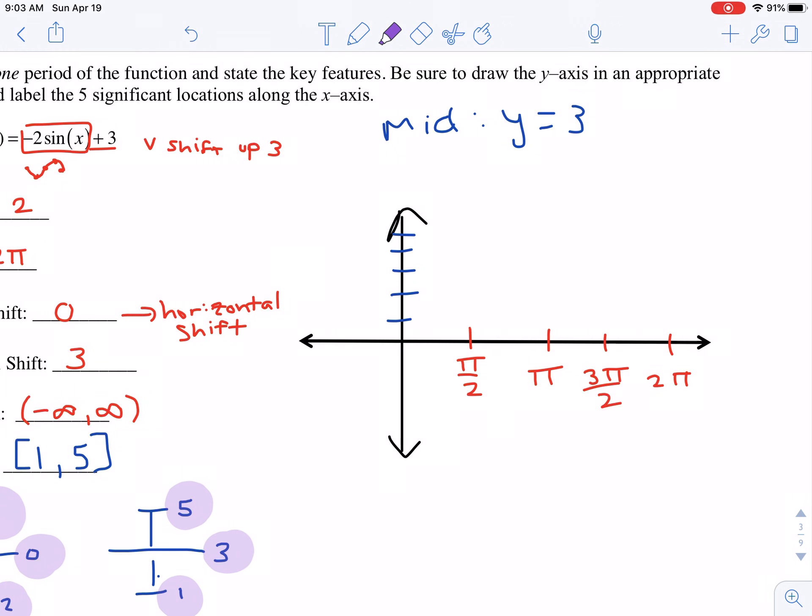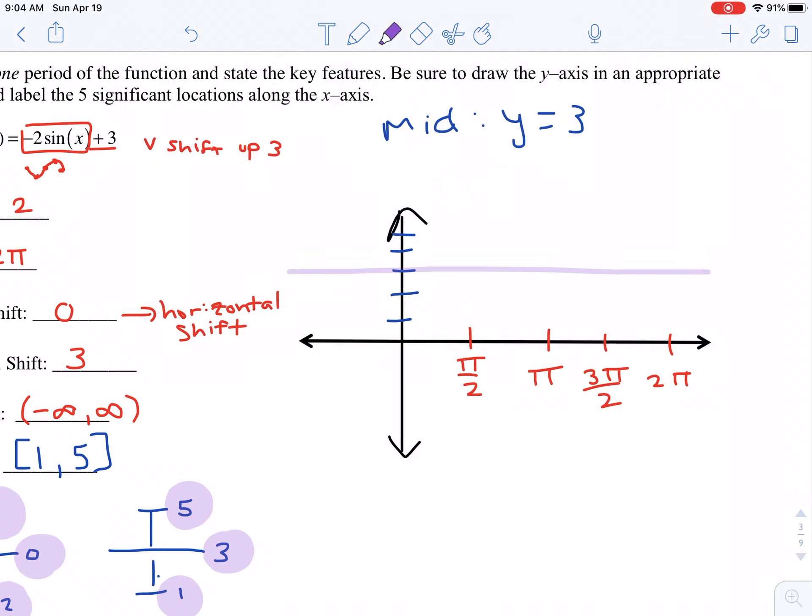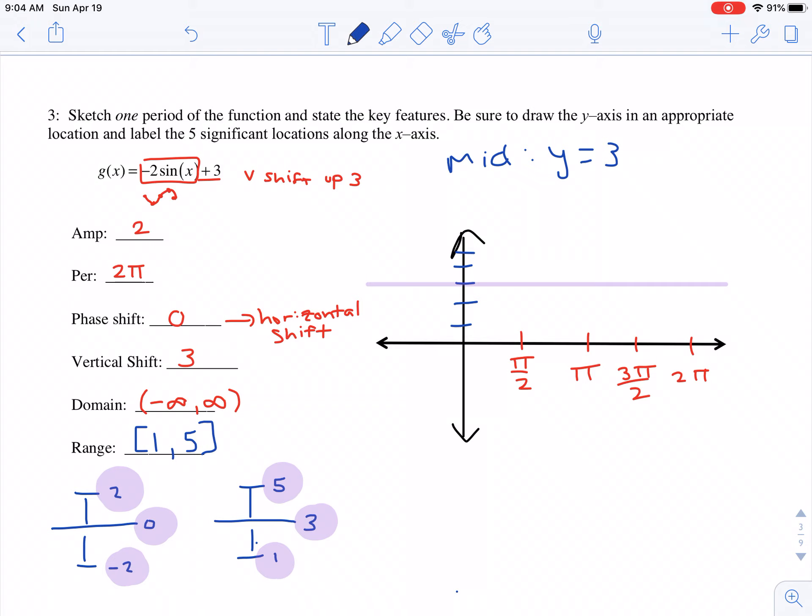Okay, so I'm going to draw in my midline here. So here's my midline. And then I see my maximum, right? My amplitude is two. So I see my maximum up at five and down at one.